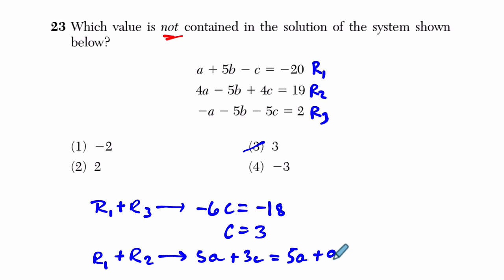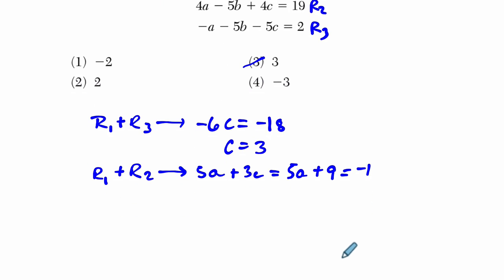So we can actually go a little bit further and say that's the same thing as 5a plus 3 times 3, or 9, and that has to equal negative 20 plus 19, right? We're adding these two rows. So that's negative 1. And now we can solve for a. Isn't that exciting?